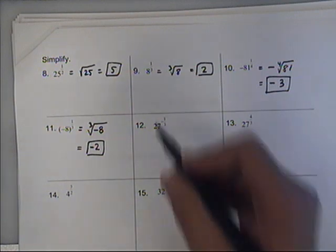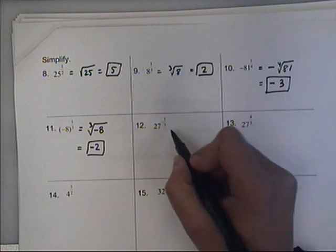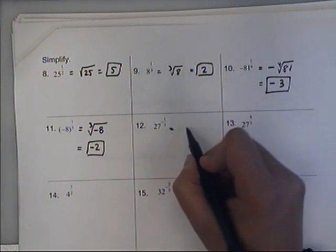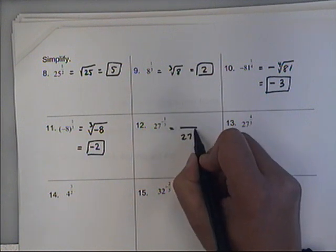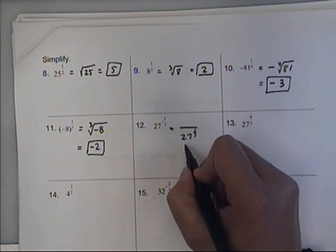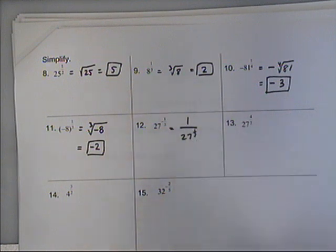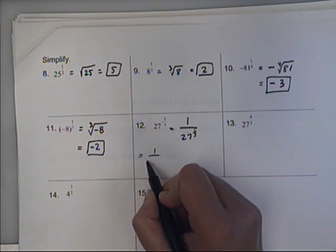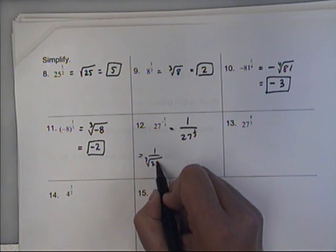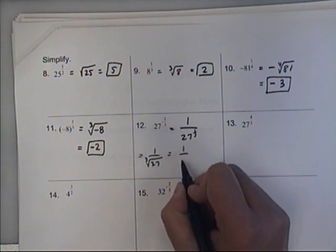When the fraction is negative, do you remember what happens here? It means that this whole thing is on the wrong side of a fraction. So we move the entire 27 to the 1 third power, making it positive 1 third, onto the bottom part of the fraction. We need a placeholder up here of 1. And then we can go ahead and say that that is the cube root of 27 down there on the bottom, which is just 3.